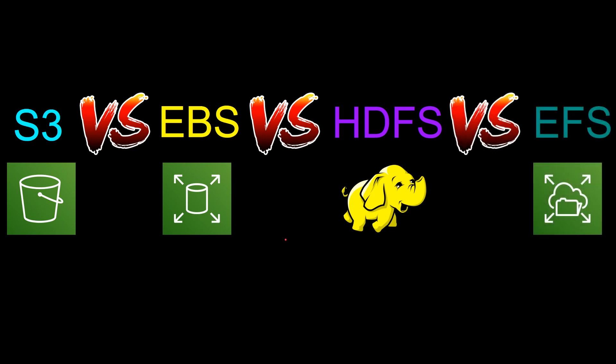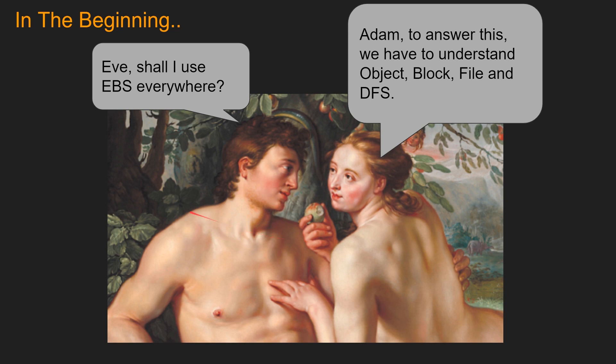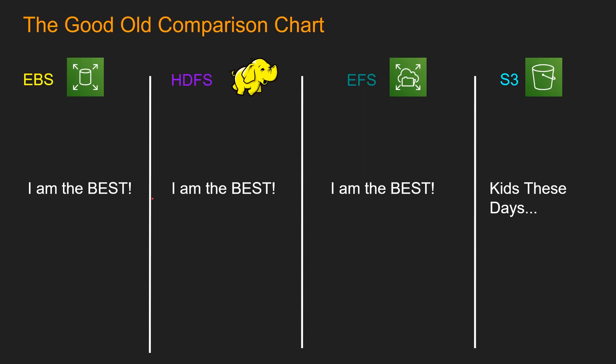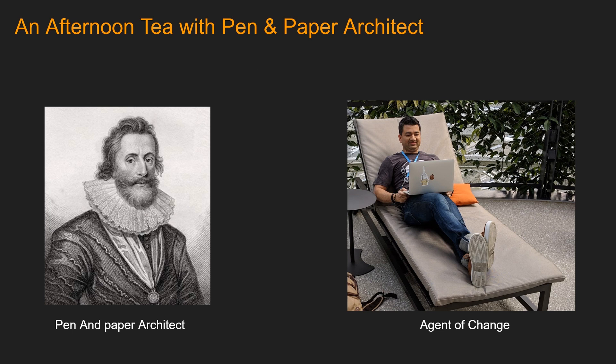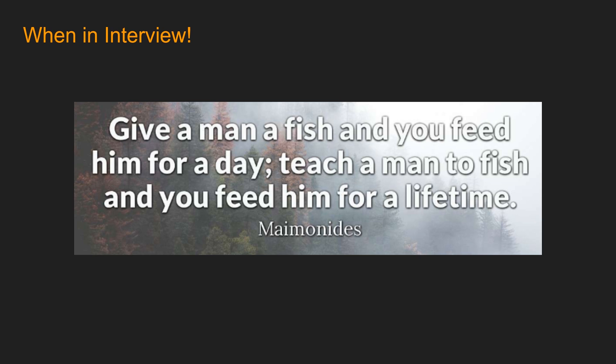So this is how this video is going to go. We are going to start by exploring what is object, block, file, and DFS. Then we are going to go over the comparison chart where we go over the features and use cases for each one of these. Then we are going to discuss architectures and use cases, and finally I'm going to share tips on how to answer this kind of comparison question in an interview.